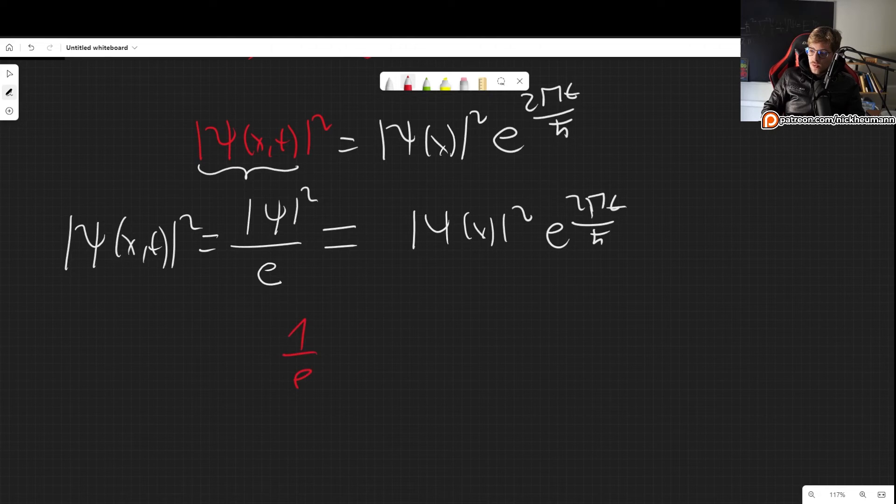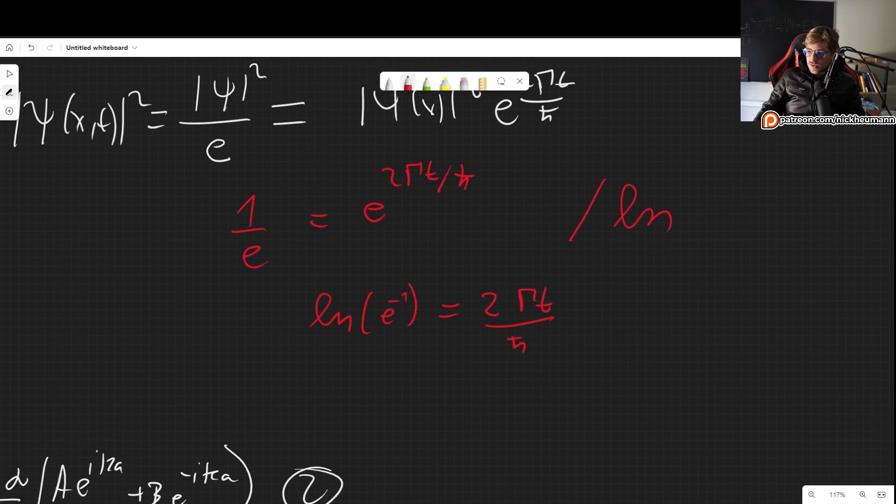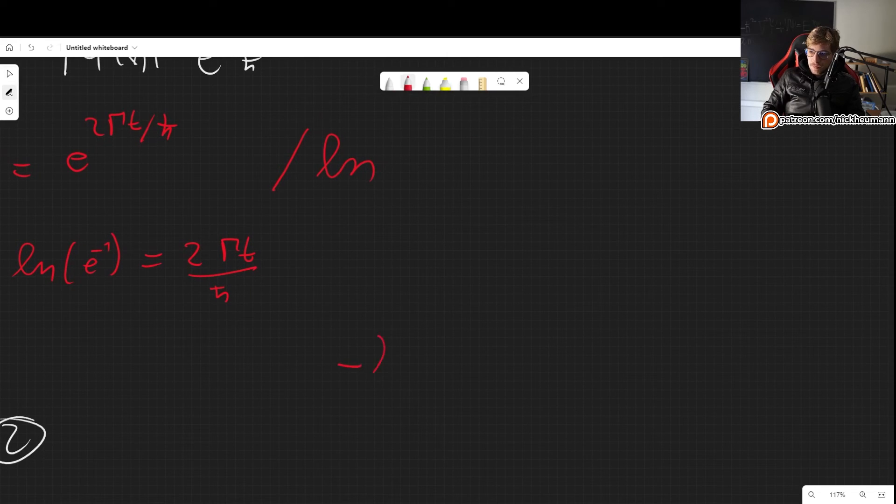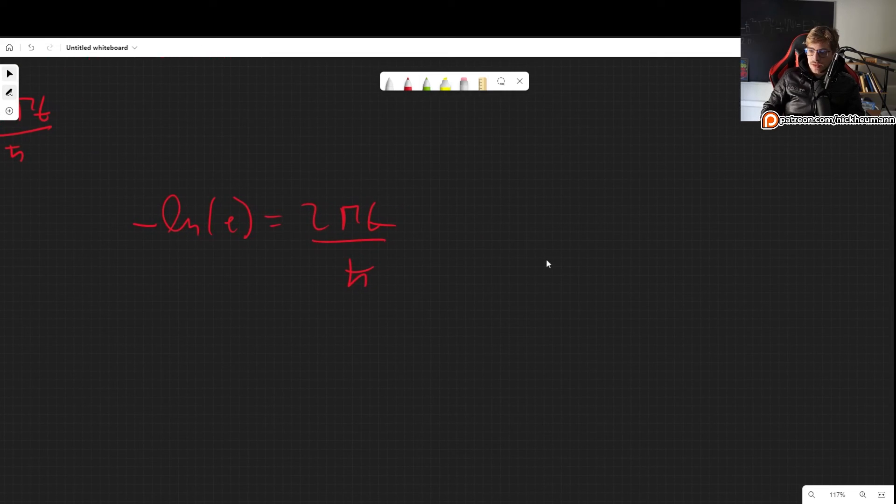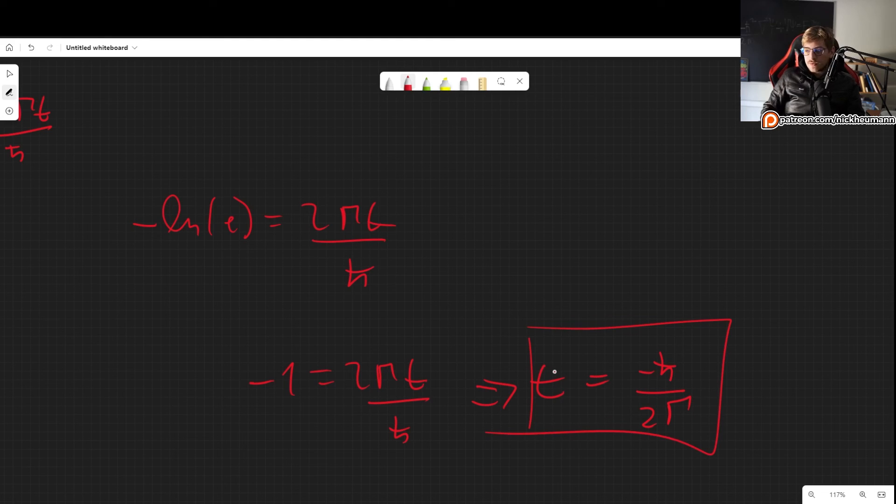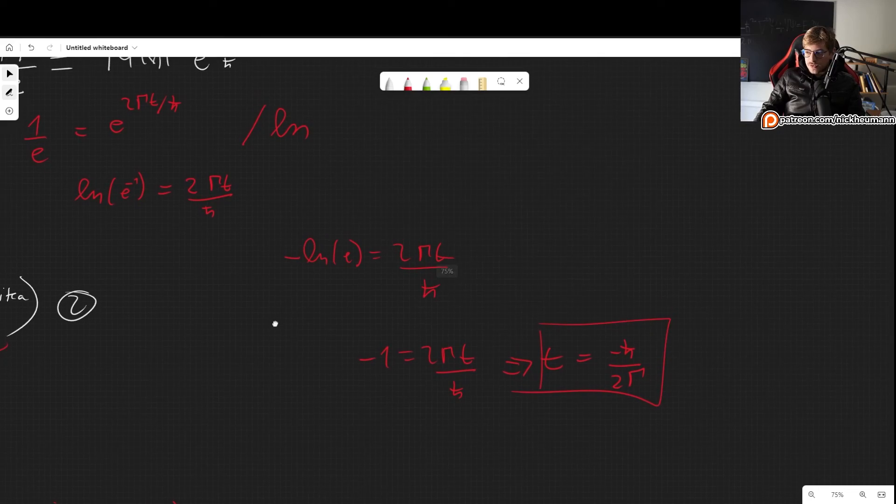So we get 1 over e is equal to e to the 2 gamma t divided by h bar. Now we can take the natural log. So we get the natural log of e to the minus 1 is equal to 2 gamma t over h bar. We can use the natural log of e. So we get minus natural log of e is equal to 2 gamma t over h bar. And finally, natural log of e is equal to 1. So we get minus 1 is 2 gamma t over h bar. Or the time that it takes for this to occur is minus h bar divided by 2 gamma. So we need, of course, gamma to be negative for time to be positive, which is what has to happen for this to make any sense.